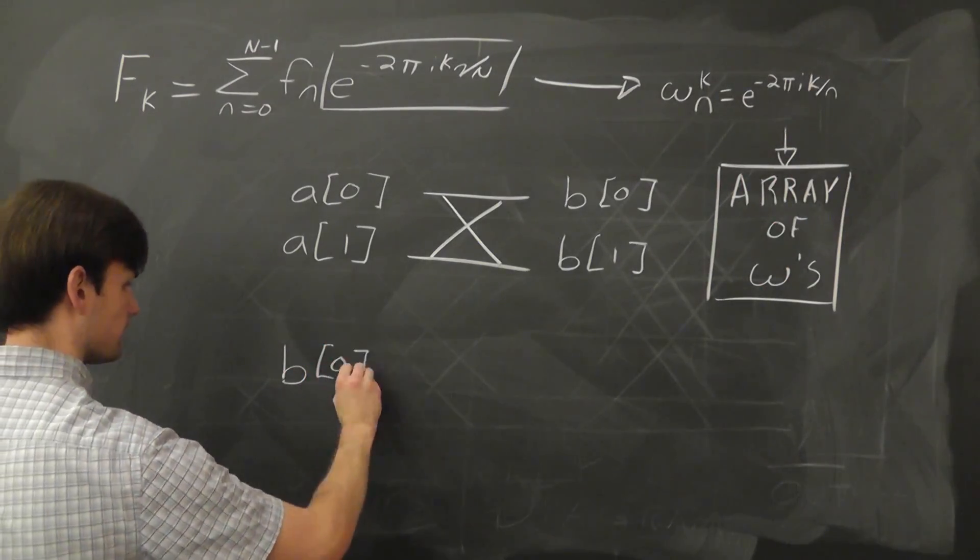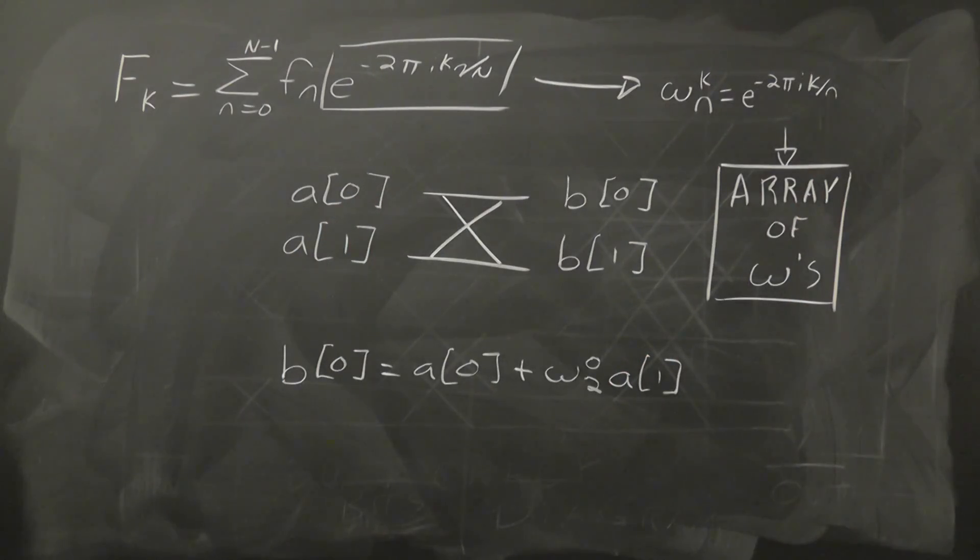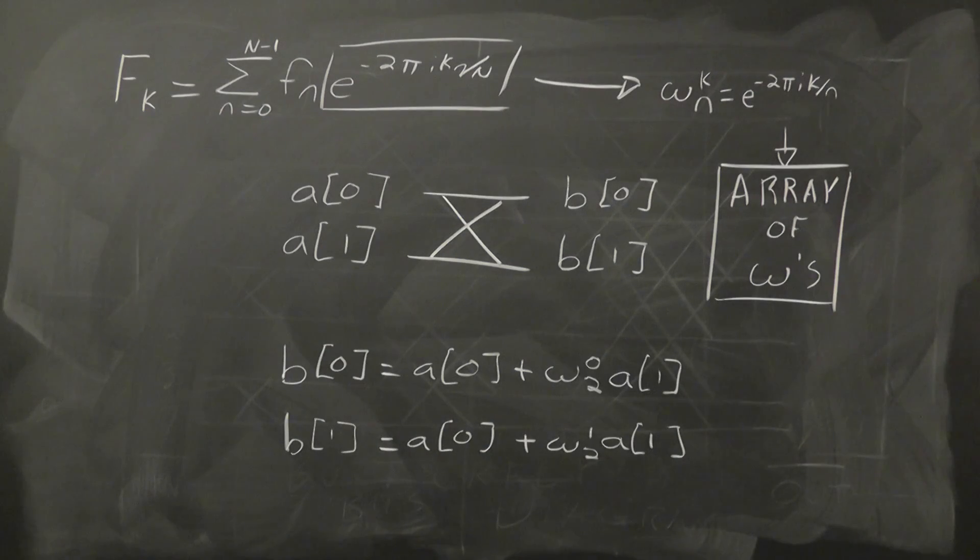Quantitatively, this butterfly says that b[0] equals a[0] plus ω₀a[1], and b[1] equals a[0] plus ω₁a[1]. It seems simple enough, but there's a trick here that nearly everyone plays that took me weeks to figure out.